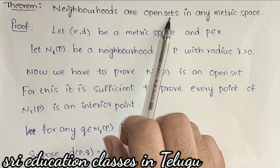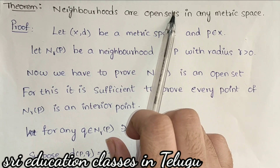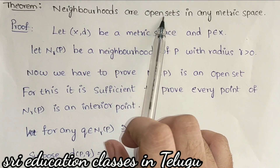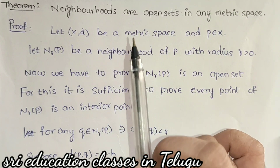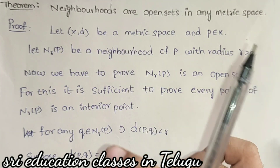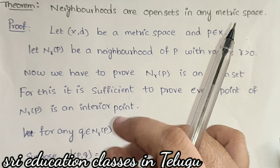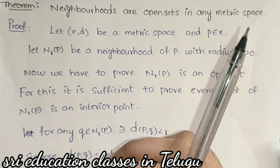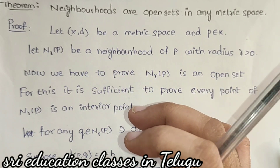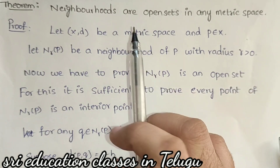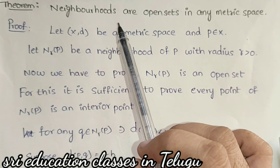First, open set definition. When we have a metric space, we call it a metric space. If the interior point exists, we call it the metric space open set. A neighborhood open set exists when an interior point exists in the neighborhood.